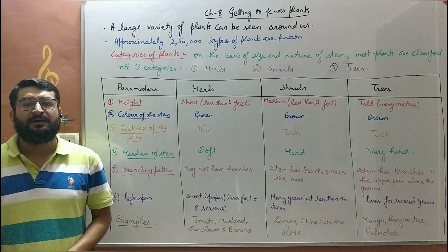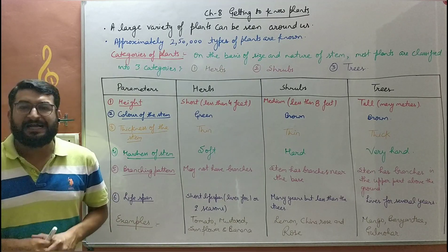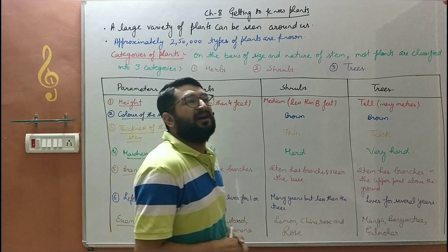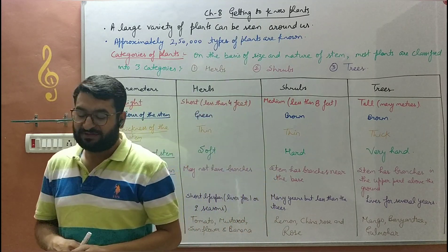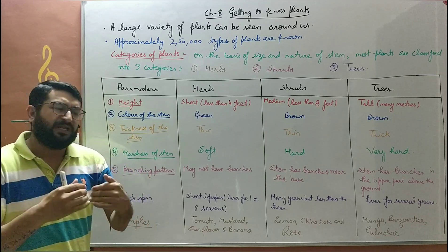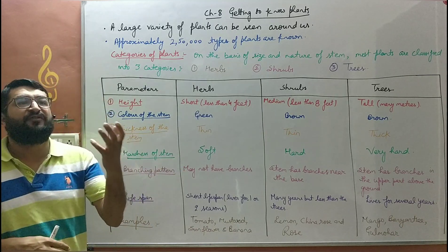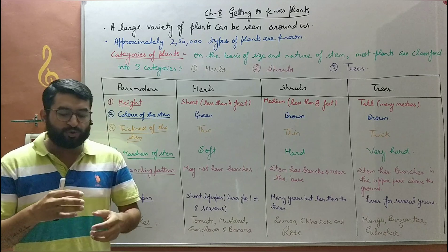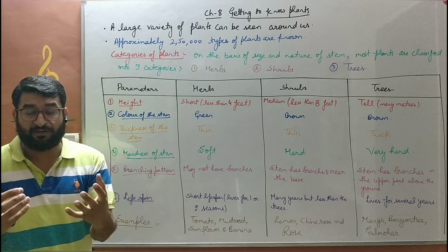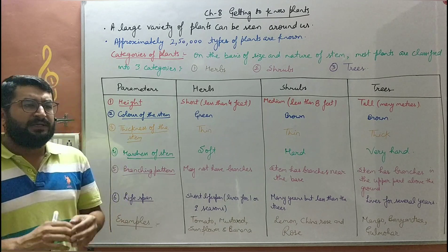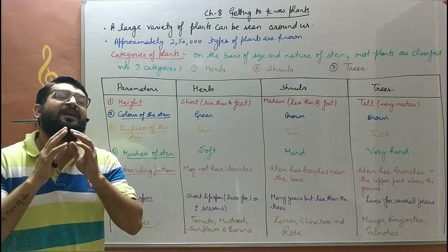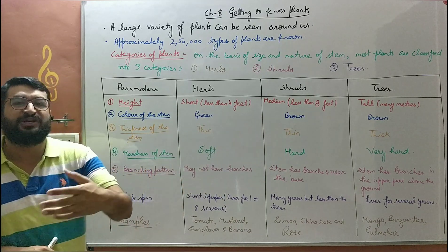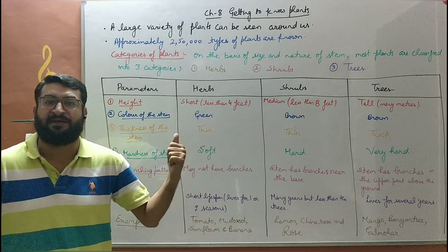Hello children, now we will start the next chapter — chapter number eight of your book, 'Getting to Know Plants'. In this chapter, we will study what plants are, the categories of different plants, how they perform food formation that is photosynthesis, and how those plants are very important for us. You must have seen around yourself there are a large number of different varieties of plants.